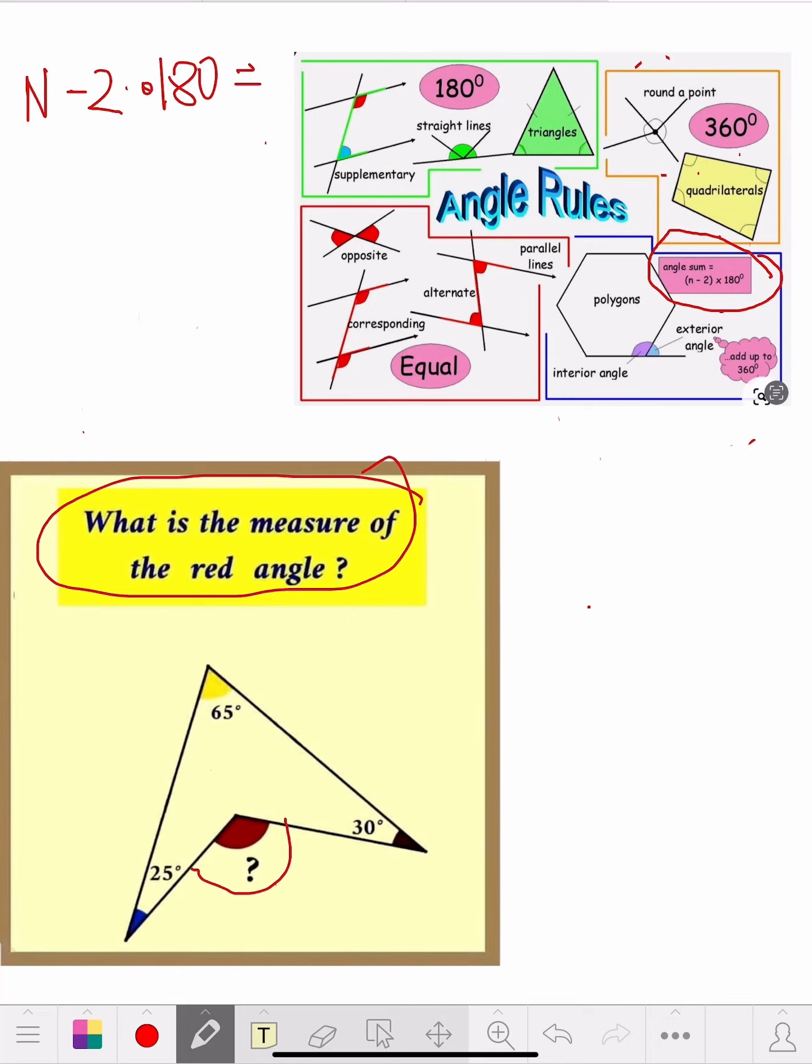So how many sides we have? We said we had four. So four minus two times 180 equals, so what's this bring? It comes down to two times 180 equals 360. So we know inside here it's all going to be 360.